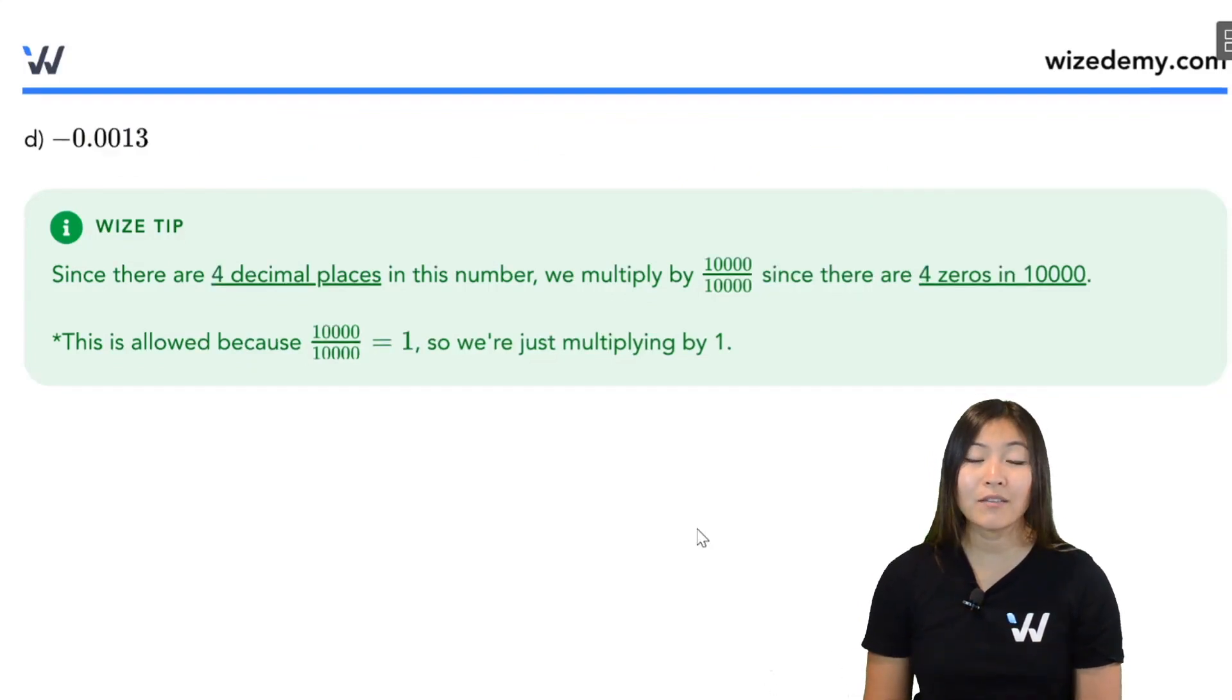Part D, we have another negative decimal. This time, we have four decimal places. So guess what? We're going to multiply top and bottom by a number with the four zeros. So that's going to be 10,000.